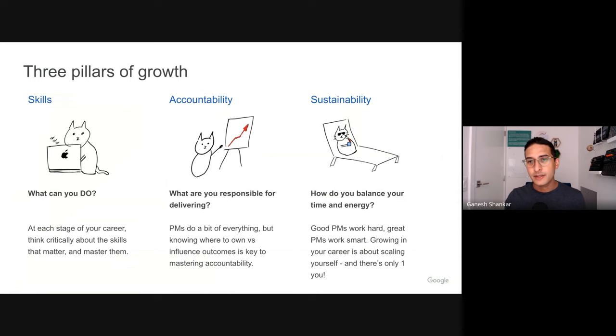Number two is accountability. What are you responsible for delivering? At different stages of your career, you're accountable for delivering different outcomes. PMing is all about influence. So it's important to know the difference between being personally accountable for delivering something and needing to influence an accountable party.